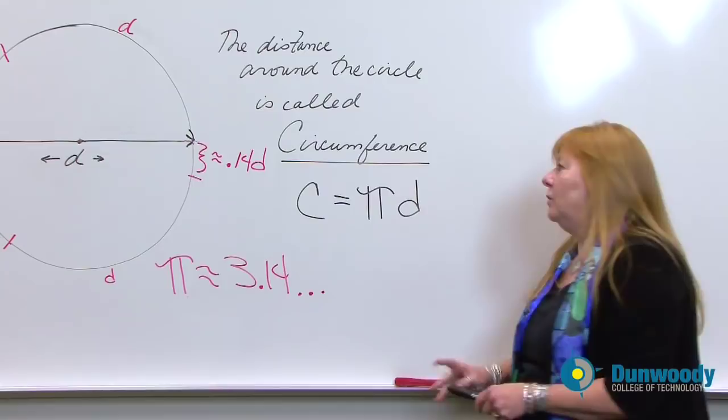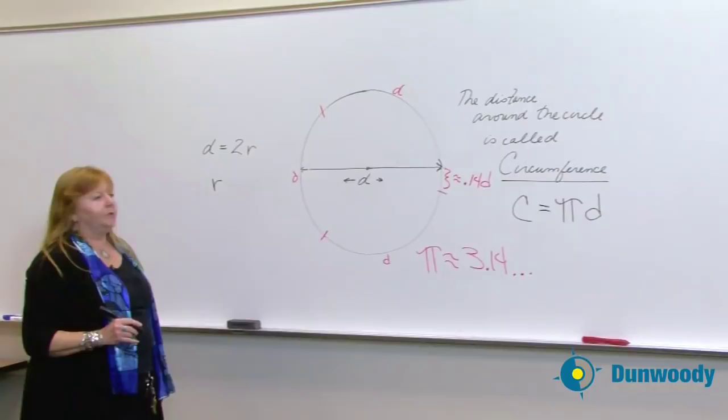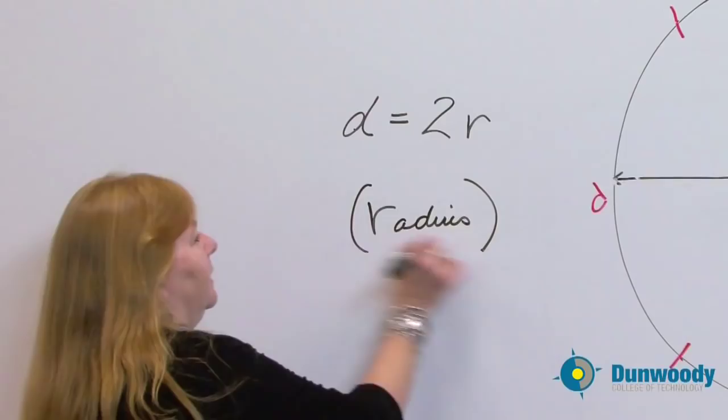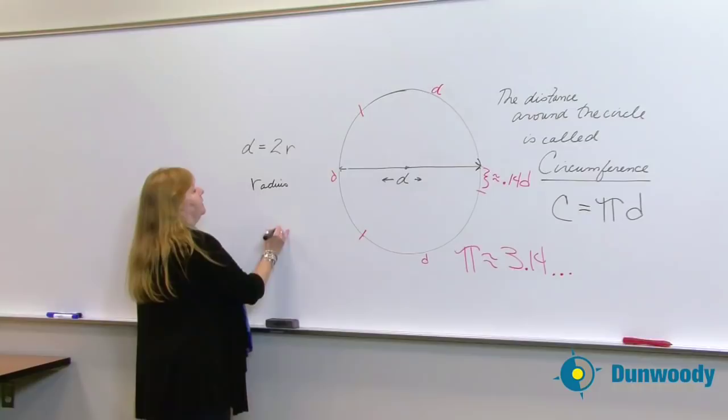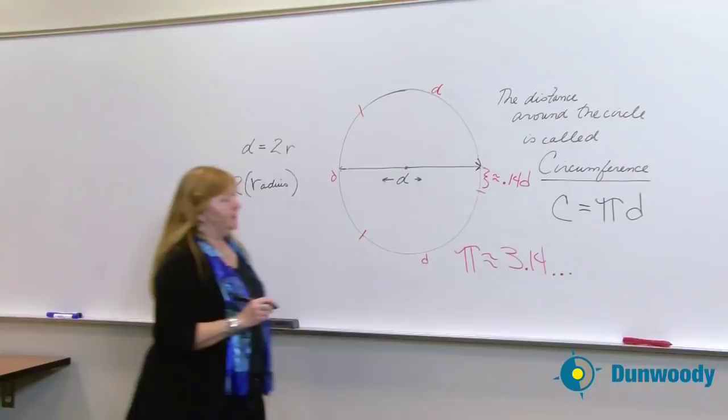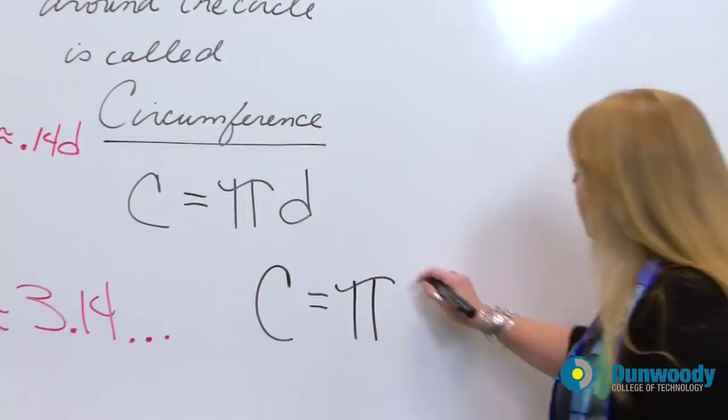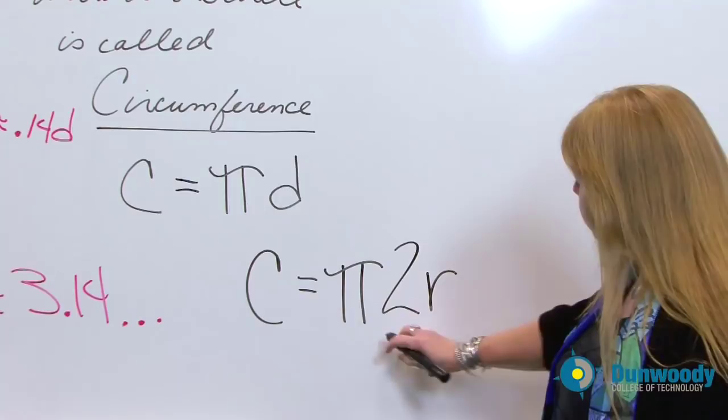Now, sometimes we don't have the diameter to work with. Sometimes all that's given is radius. And if the radius is given, what do we know about the radius? The radius times 2 will always give me the diameter. So another way to look at circumference would be pi times 2 times the radius. 2 times the radius is another way to talk about the diameter.